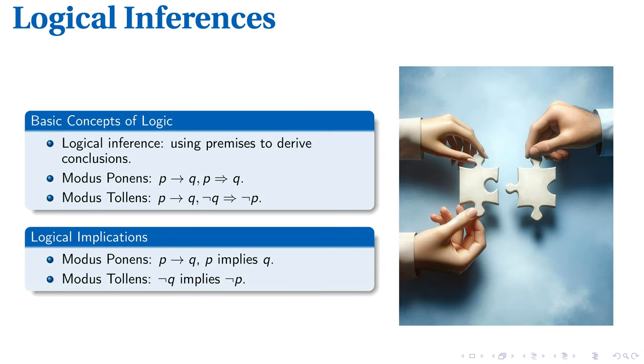Logical inference, fundamental to structured reasoning, is our focus. It uses premises to deduce conclusions using principles like modus ponens and modus tollens. The modus ponens principle implies if P then Q and P is true, therefore Q is also true. Contrastingly, modus tollens reasoning works differently. If P then Q, but Q is false, it leads us to infer that P must also be false.